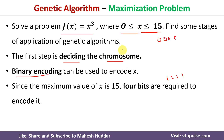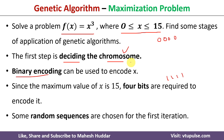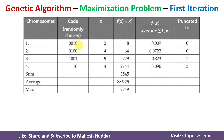Once you represent the chromosome, the next step is to select the chromosomes randomly for the first iteration. So in this case, I will select four chromosomes randomly: 0010, 0100, 1001, and 1110. The associated x values are 2, 4, 9, and 14.